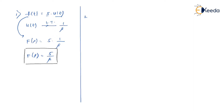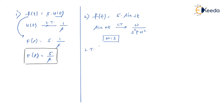The second signal is 5 times sine of 3t. Remember, the Laplace transform of sine(ωt) is ω upon s² plus ω². By comparison, ω equals 3. So the Laplace transform of 5 times sine(3t) is 5 times 3 upon s² plus 9, which gives 15 upon s² plus 9. This is F of s for the given f of t.